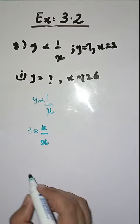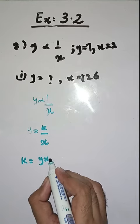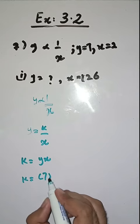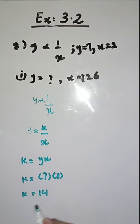सबसे पहले हमने k की value find करनी है. k is equal to y x, so y की value हमारे पास 7, x की value है 2, so k is equal to 14. k की value हमने find कर लिया which is 14.